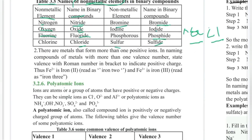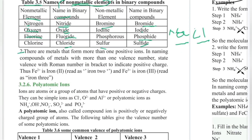The next rule is that some metals have more than one positive ion. For metals that form more than one positive ion, the oxidation state must be indicated. A Roman numeral in parentheses is used to show the positive charge of the metal.